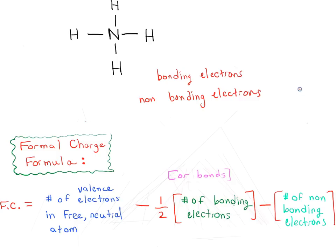So, number of bonding electrons — let's start with this hydrogen over here. How many bonding electrons does this hydrogen have? Well, it has a bond with nitrogen, so it has two bonding electrons. That actually fills up the 1s shell of the hydrogen, so it can't fit any more electrons than that.